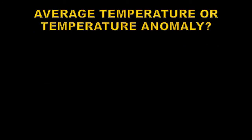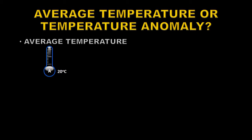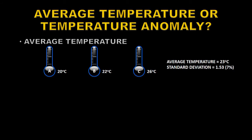There's often a great deal of confusion between average temperature and average temperature anomaly. Let's deal with average temperature first. Let's assume we have three thermometers trying to measure the same temperature. Thermometer A registers 20 degrees centigrade, thermometer B registers 22 degrees centigrade, and thermometer C registers 26 degrees centigrade. We have no way a priori of knowing which of these thermometers is correct — in fact none of them may be. So the best thing we can do in science is to take an average, and the average of these three readings is 23 degrees centigrade. But because there's such a large change in the temperature between the three thermometers, there's a large uncertainty introduced, which we can calculate using the standard deviation. In this case the standard deviation is 1.5 degrees centigrade.